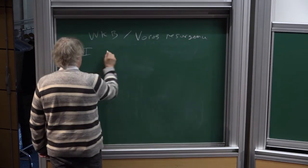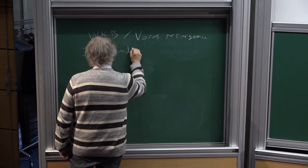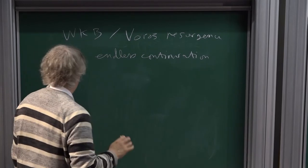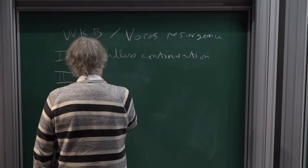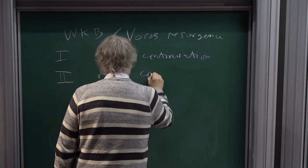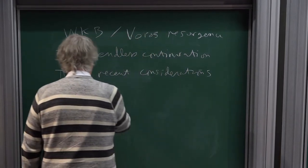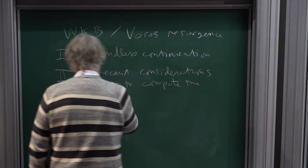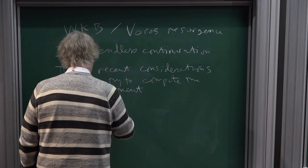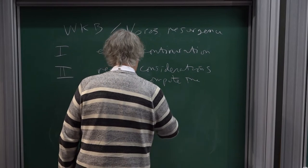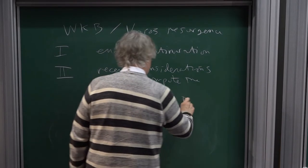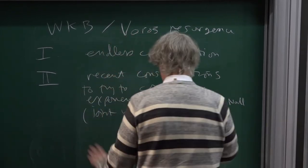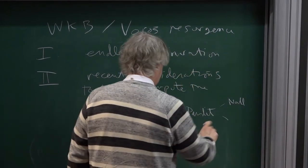The plan of the talk is: first, to talk about how to do the endless continuation in some particular case; and second, to talk about some more recent considerations to try to compute the exponent. The second part is joint with Ludmila Katzarkov and Pranav Pandit. The first part was also with Alex Noll, and there is subsequent work in symplectic geometry with Fabian Haiden.